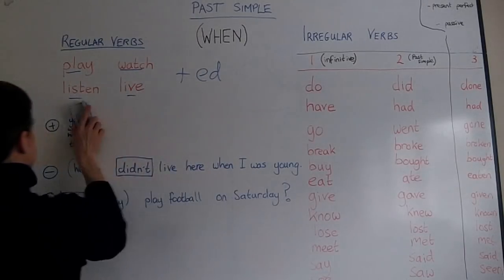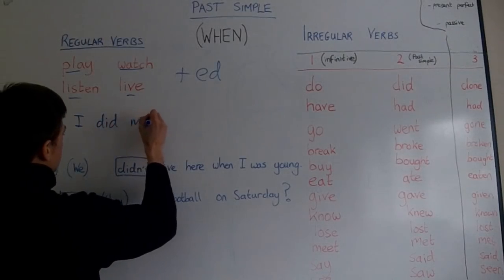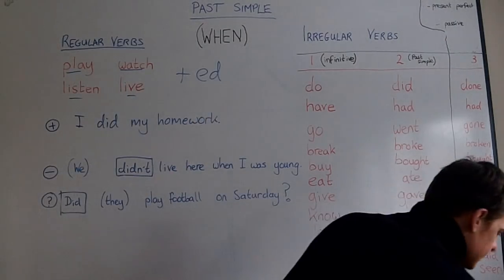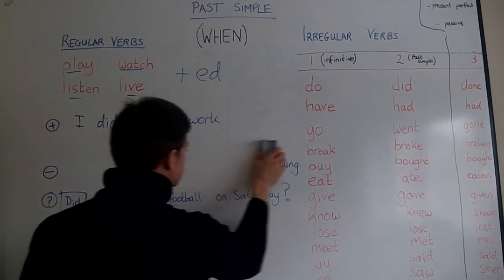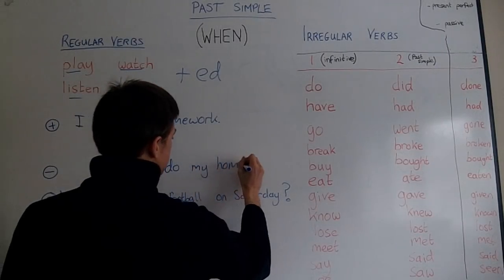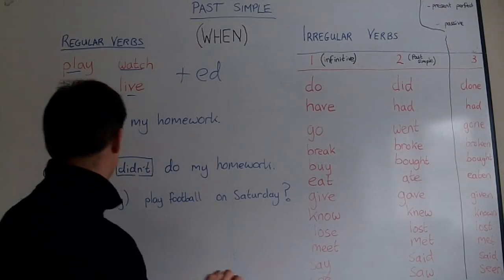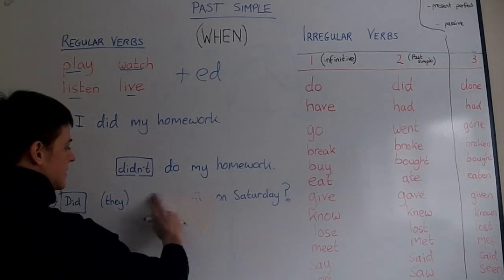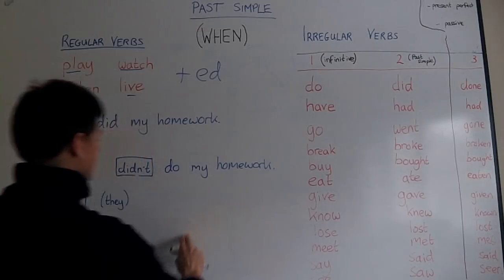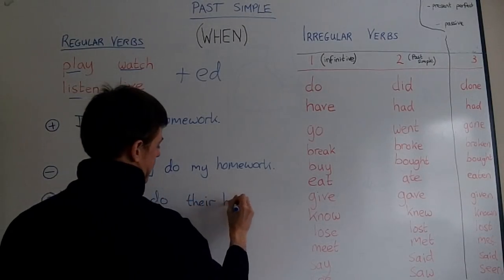Let's use an example. I did my homework yesterday — that would be the positive. But if we want to make that sentence negative: I didn't do my homework. It might look strange — 'didn't do' — but that's normal English. And if you want to make it a question: Did you do your homework? Did they do their homework? Did your class do their homework?